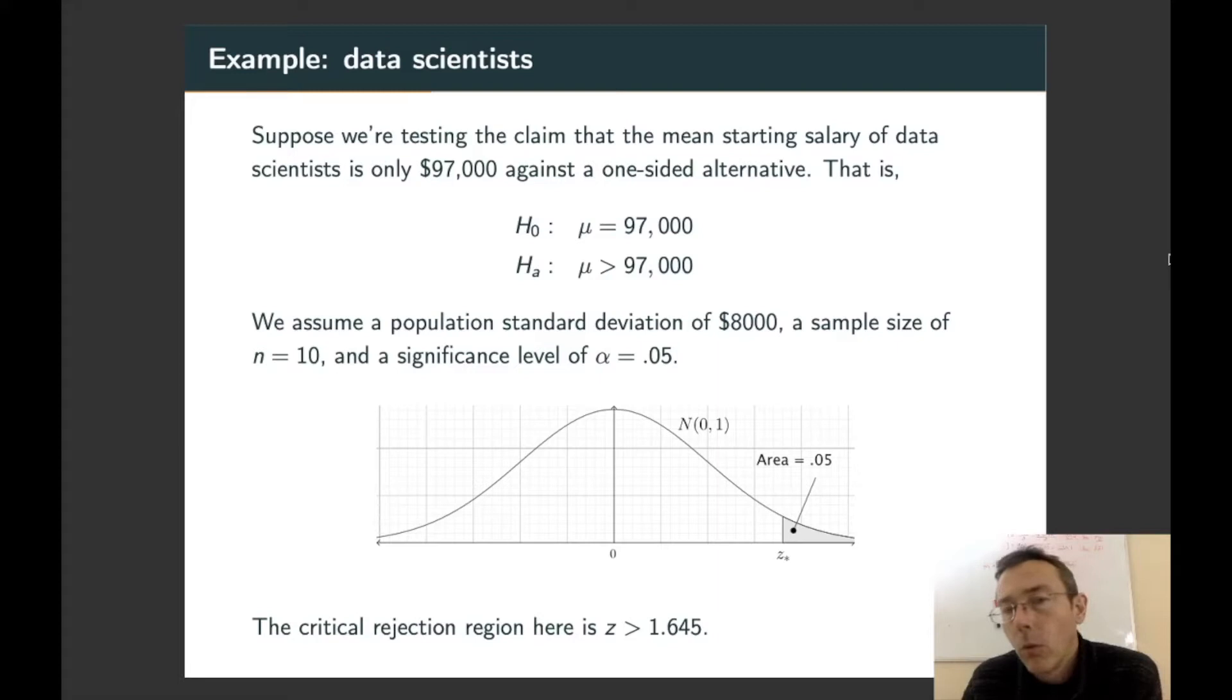We're going to do this with critical regions, and if you have alpha equals 0.05 for a right-tailed alternative hypothesis, you get a picture like this. The area to the left is going to be 0.95, and so z-star is going to be 1.645. If we go out and get a sample that has a z-score greater than that, that's going to mean we can reject the null hypothesis.